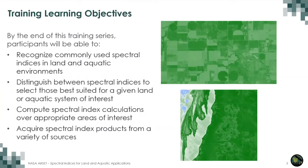Here are some of the general objectives for this training as a whole: to recognize some of the commonly used Spectral Indices for land and aquatic environments, to distinguish between the Spectral Indices and select the best ones suited for any given land or aquatic system application of interest, to learn how to compute Spectral Indices calculations over areas of interest, and how to acquire products already available for Spectral Indices from a variety of sources.